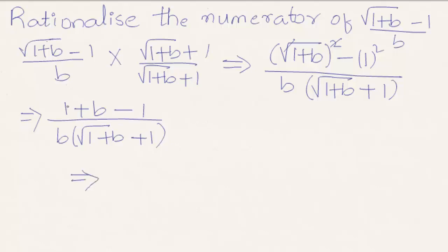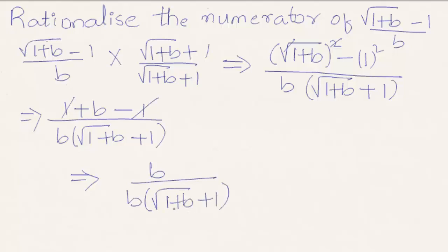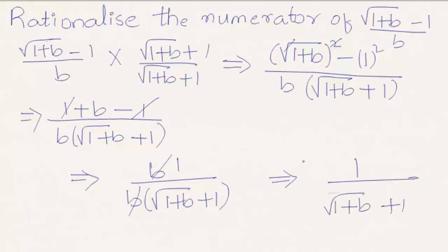So that implies here we can cancel plus 1 and minus 1, giving us b divided by b into under root 1 plus b plus 1. That implies here we can cancel b in the numerator and b in the denominator, and we get the result as 1 divided by under root 1 plus b plus 1.